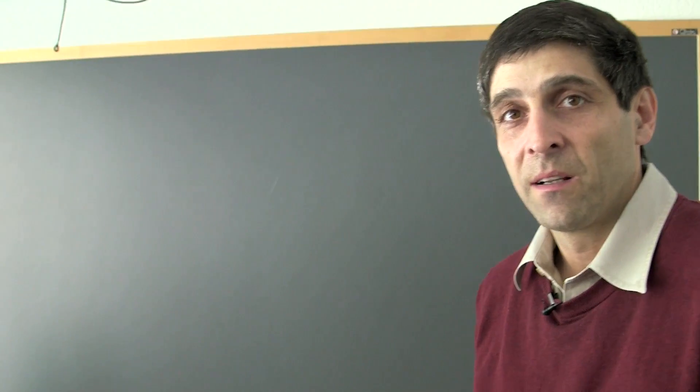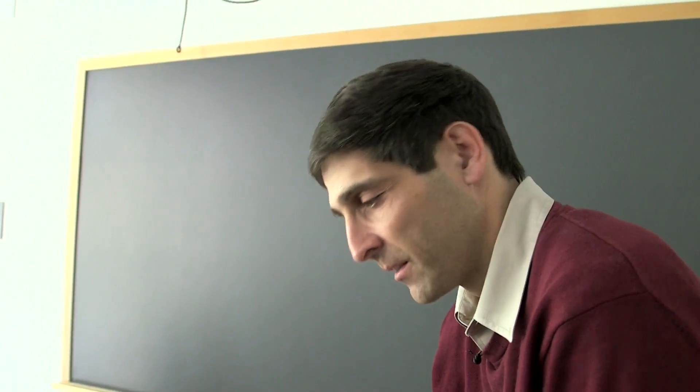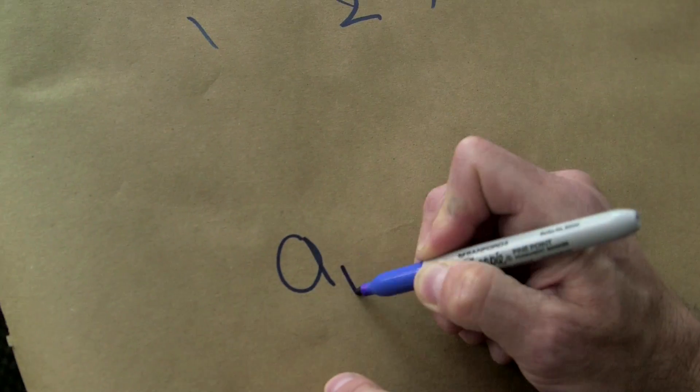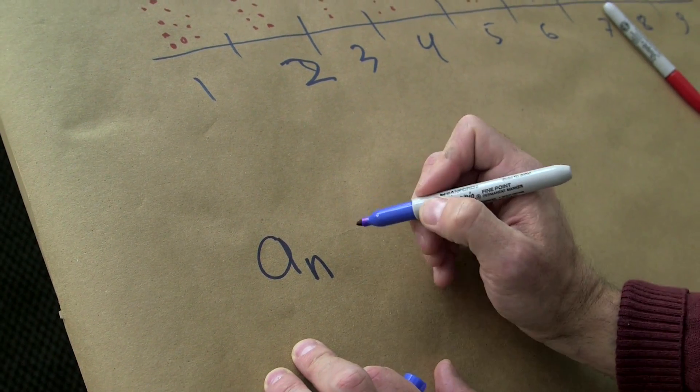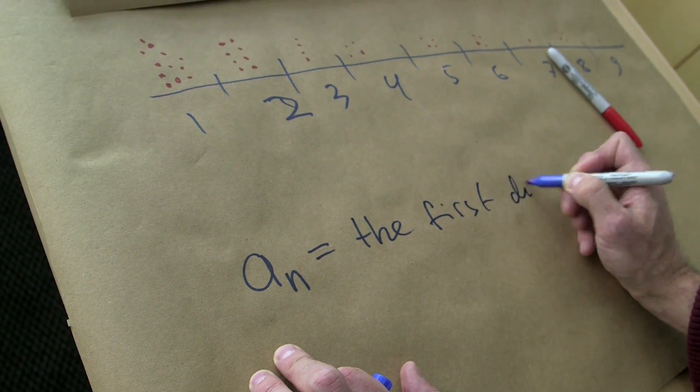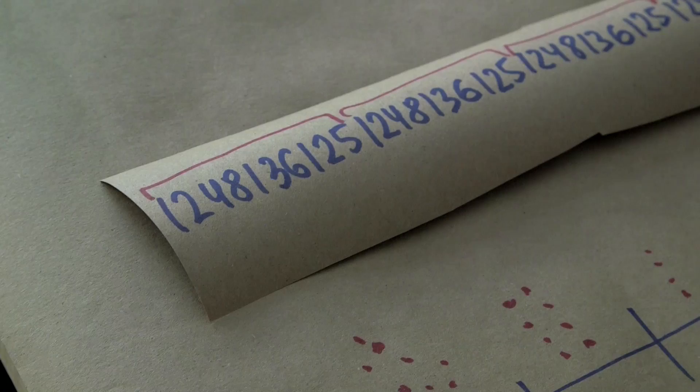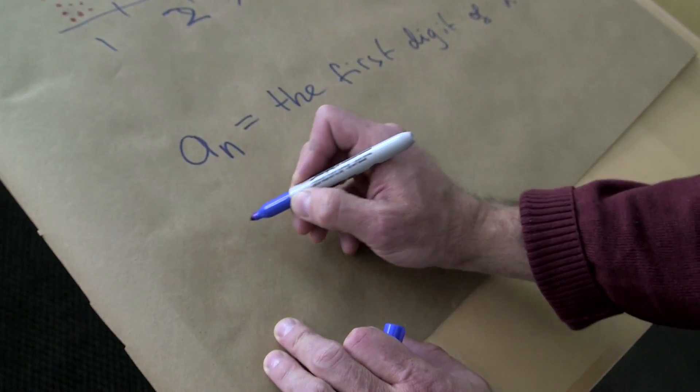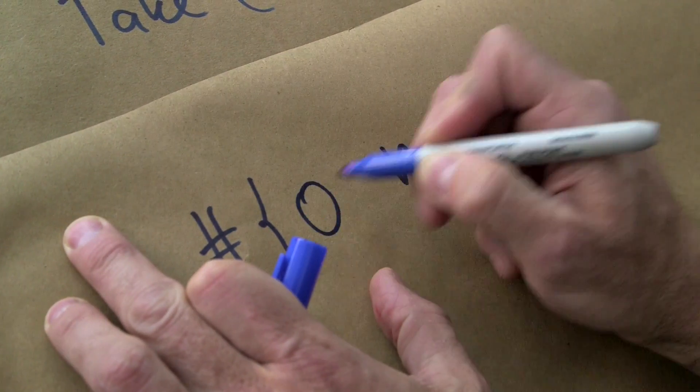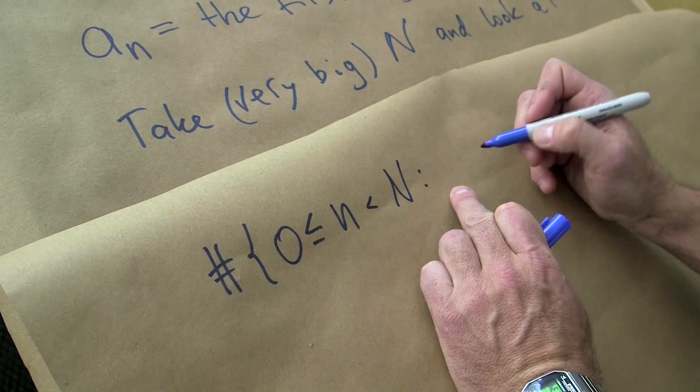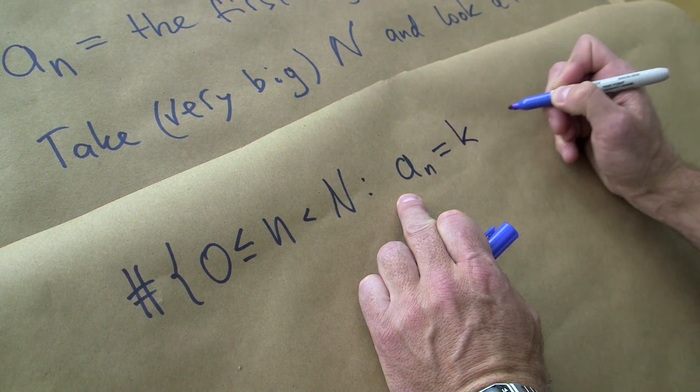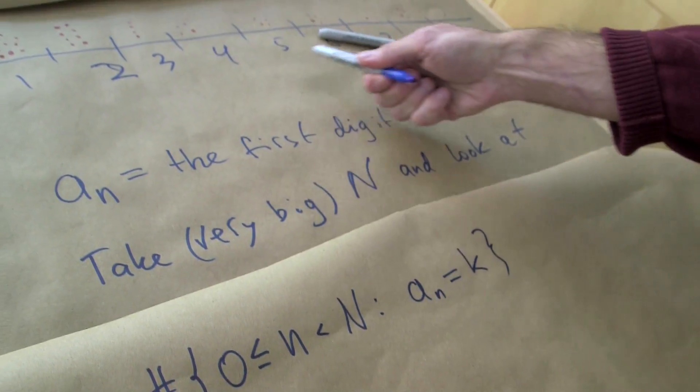Well first of all let me state the question. Mathematicians when they state equations they sometimes use some notation, right? You probably got used to it because you watched a hundred videos of this channel already. So let me talk about a sub n. n is a natural number and a sub n is the first digit of 2 to the n. Here we have a sub 0 and then a sub 1 and a sub 2, a sub 3 and so on.